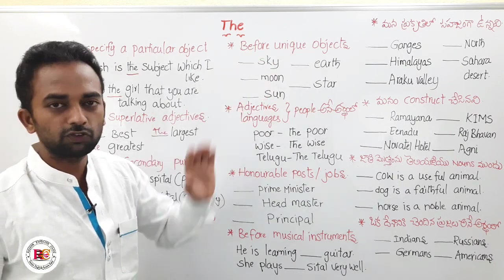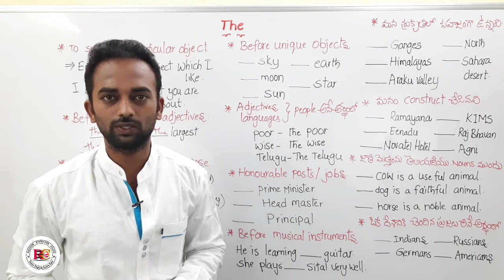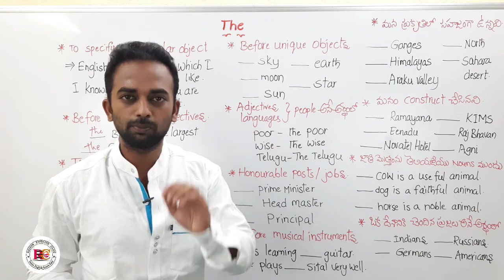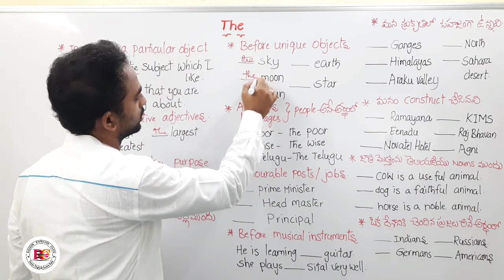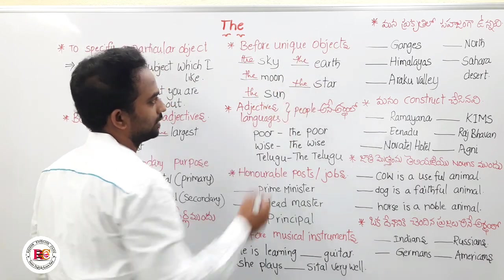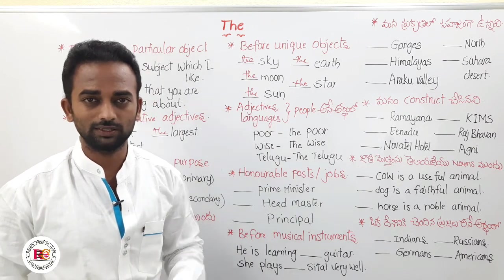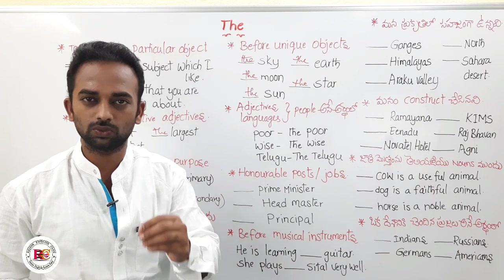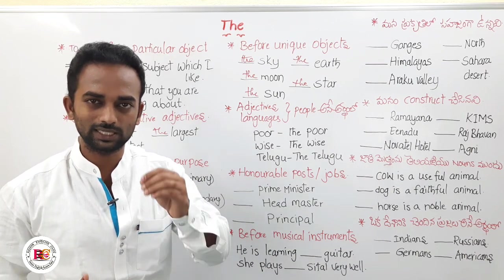The next point is: we use 'the' before unique objects. That means if there is only one of something in the universe, we use 'the'. For example: the sky, the moon, the sun, the earth, the stars. So we say: 'The sun rises in the east' and 'The earth revolves around the sun.' These are unique objects, so we always use 'the' before them.